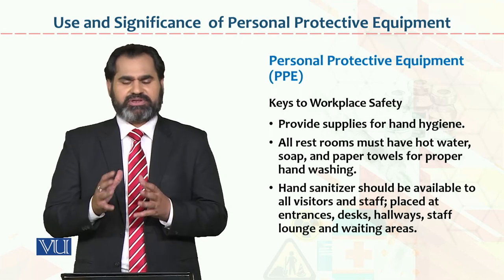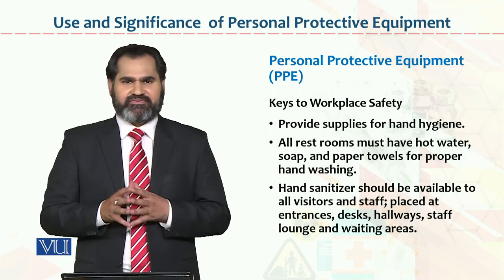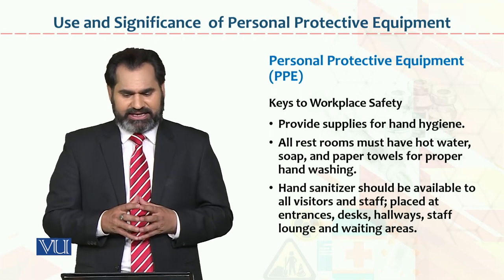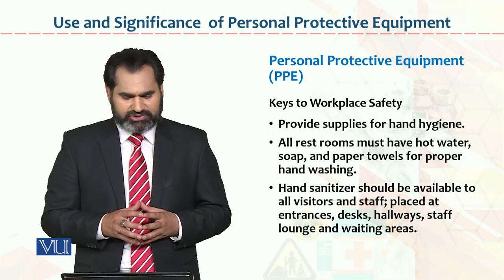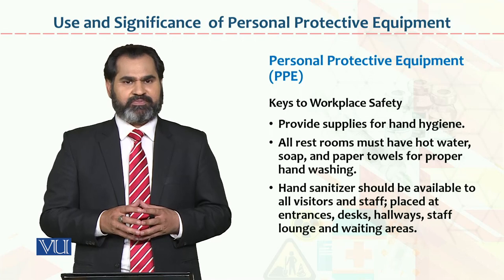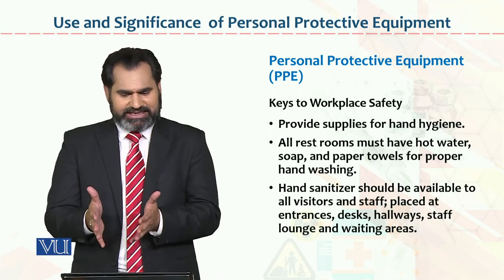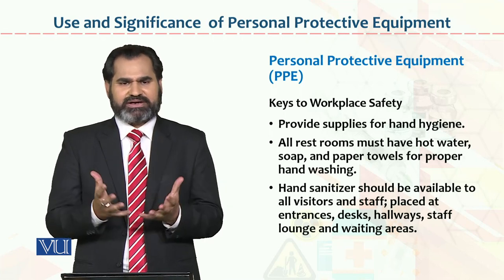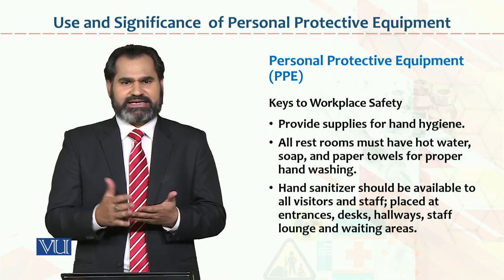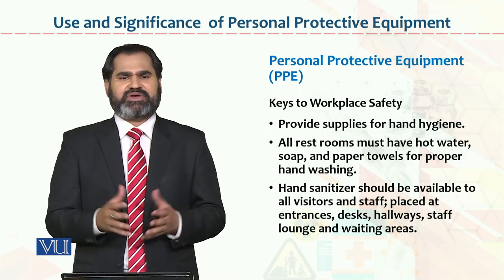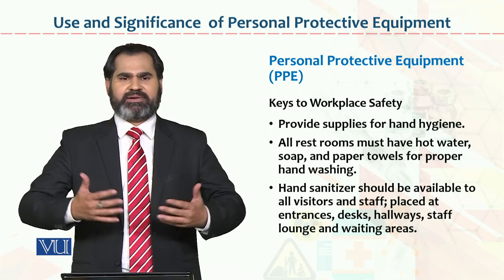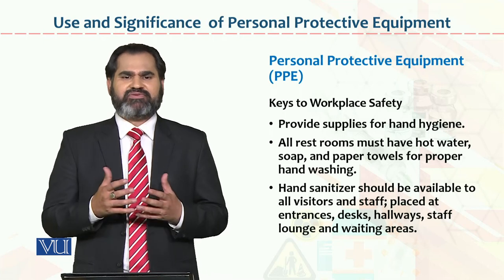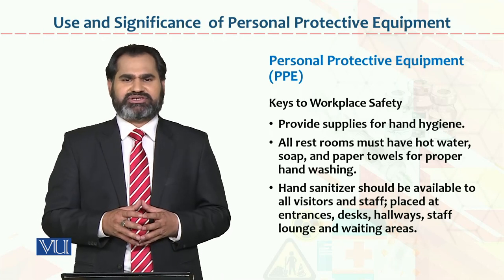Personal protective equipment — keys to workplace safety. This is a very important point: PPE is a key element for workplace safety. Provide supplies for hand hygiene — restrooms must have hot water, soap, paper towels for proper hand washing, and hand sanitizer. If you wash your hands with hot water, germs will be eliminated. As we saw with COVID-19 all over the world, PPE was heavily used. If we make this a habit in our lives, we can avoid many infectious diseases.